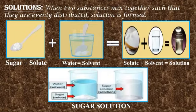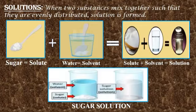What is a solution? When two substances mix together such that they are evenly distributed, a solution is formed. In sugar solution, sugar is the solute, meaning the substance that dissolves, and water is the solvent, meaning the substance in which a solute dissolves. This is the example properly shown in the picture.